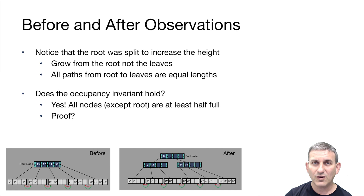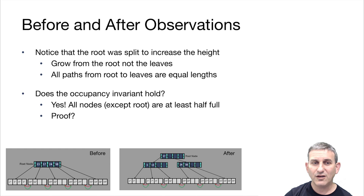By growing upwards at the root, we guarantee the tree is balanced. All paths from the root to leaves are always the same length. And the key to the B+ tree's guarantee of log search is that all paths are always the same length. All nodes except the root are at least half full, and you should be able to prove to yourself that our split algorithm on insertion is going to guarantee the occupancy invariant.